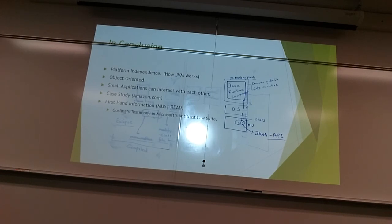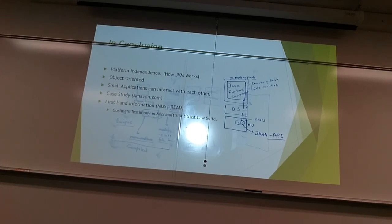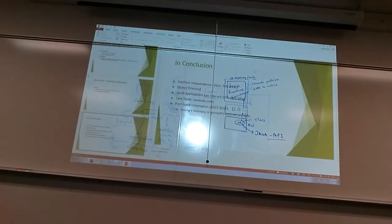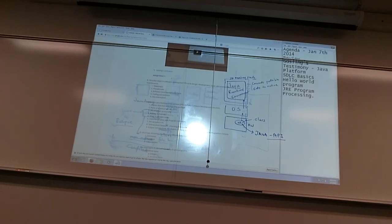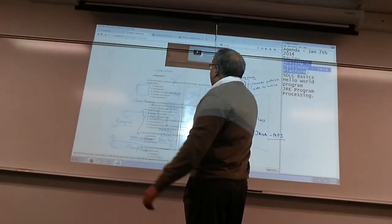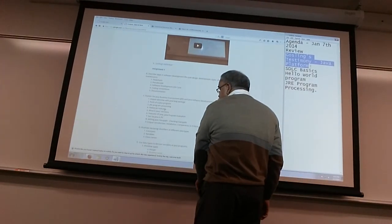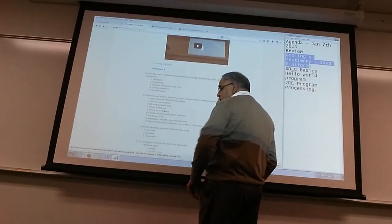In conclusion, Java is platform independent, object-oriented, with small applications that interact with each other. There is the James Gosling testimony on the course website. The best way to find things is to just search the website — it'll be faster. Gosling's testimony is a document I've uploaded a link to, and I think you guys should really save a copy of it before it disappears from the internet.